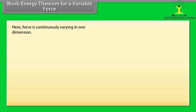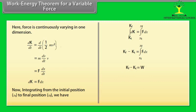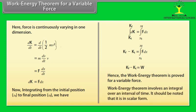Work Energy Theorem for a Variable Force. Here, force is continuously varying in one dimension. By calculating dk/dt = d/dt·½mv square, we get dk/dt = F·dx/dt which gives dk = F dx. Now, integrating from the initial position xi to final position xf, we have Kf - Ki equals work. Hence, the work energy theorem is proved for a variable force. Work Energy Theorem involves an integral over an interval of time. It should be noted that it is in scalar form.